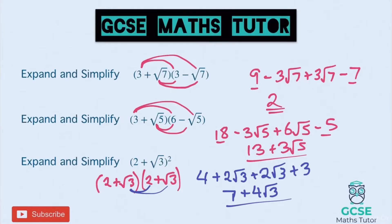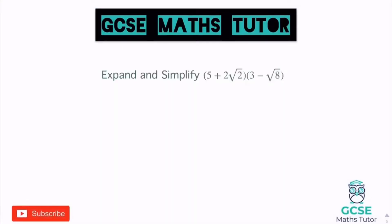Now let's look at some slightly different ones. Expand and simplify this — there's a number in front: 2 root 2 here. And there's a slightly odd term — we've got a root 8, which isn't fully simplified. You don't have to simplify it at this point — we can see if we can simplify it later on. You wouldn't be wrong to simplify it now, but I'm just going to leave it and see what happens.